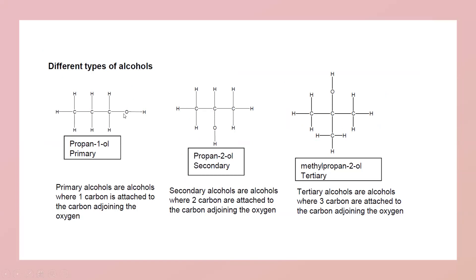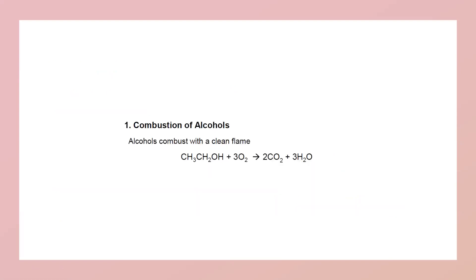Primary means the carbon attached to the OH group has one carbon chain. If two carbon chains are present, it is secondary, and if three carbon chains are present, it is tertiary. When we burn these alcohols, alcohol can be used as a fuel, so combustion of alcohol produces carbon dioxide and water, and heat is also produced.